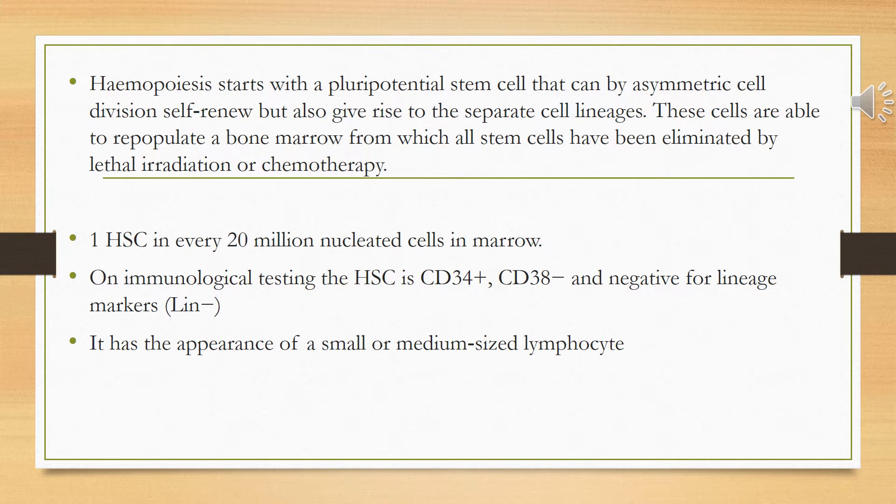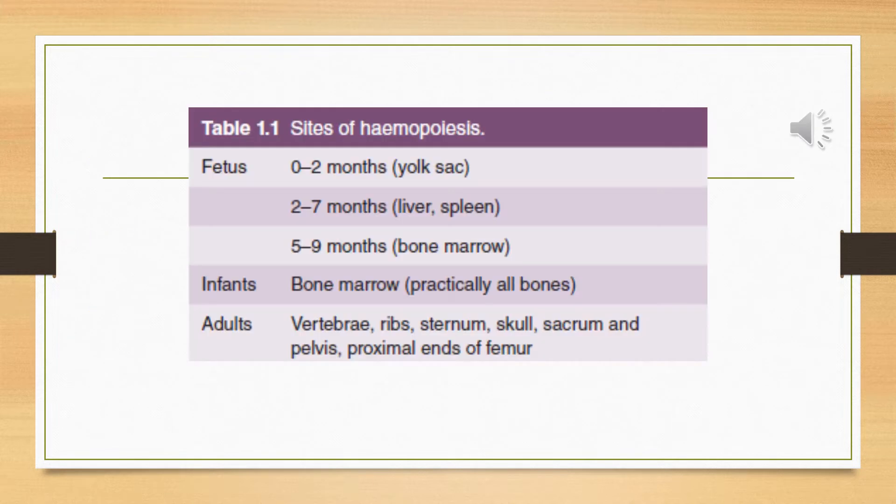Formation of new blood cells occurs in the bone marrow. The pluripotent stem cell is present in the bone marrow and is found at a ratio of one in every twenty million cells. On immunological testing, it is known that CD34 receptors are present on the surface of stem cells, so stem cells are positive for CD34 and negative for CD38.